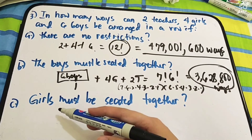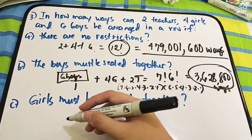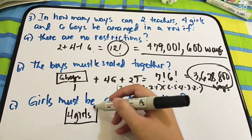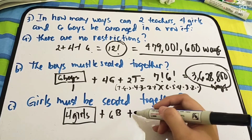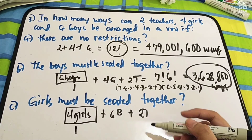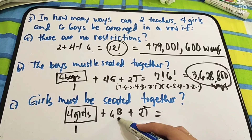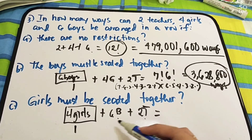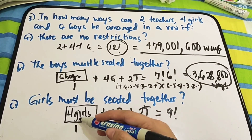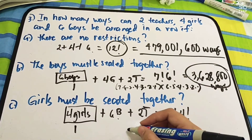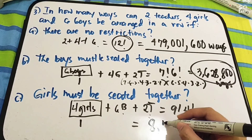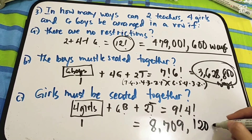Next: girls must be seated together. Si girls naman daw po yung magkakasama — we have four girls as one group, plus six boys, plus two teachers. So, one group plus six plus two: that is nine. Nine factorial. And then si four girls, pwede pang magkapalit-palit — that is four factorial. Nine factorial times four factorial. The answer is 8,709,120 ways.